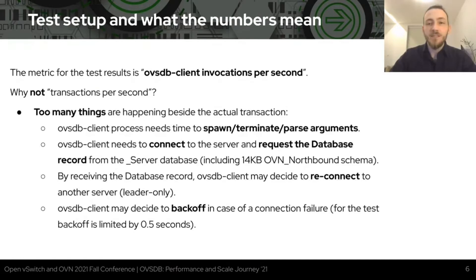The metric for this test is OVSDB client invocations per second, not transactions per second. This is because many things happen besides the actual transaction — for example, the OVSDB client process needs time to spawn, terminate, and parse arguments. It also connects to the server and requests database records, which includes sending a 14KB northbound schema to the client. Clients may also decide to reconnect since the connection is leader-only, or back off in case of a connection failure.